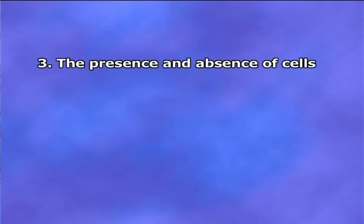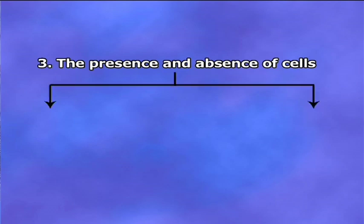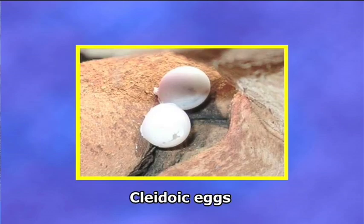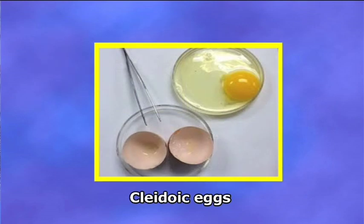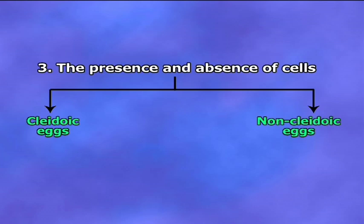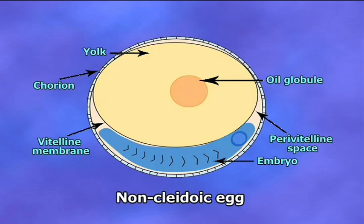Criteria number three: according to the presence and absence of cells, there are two types of eggs. Cleidoic eggs — cleidoic means container-like. The eggs of reptiles and birds are self-contained and fully loaded with yolk; they are surrounded by albumin and a waterproof shell. Non-cleidoic eggs are not protected by a shell and are found in animals where internal development takes place.